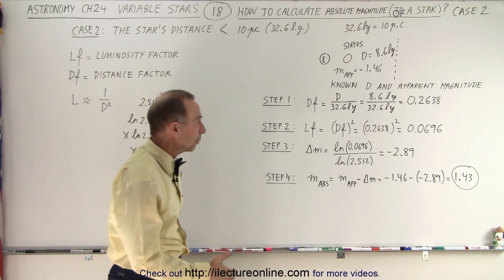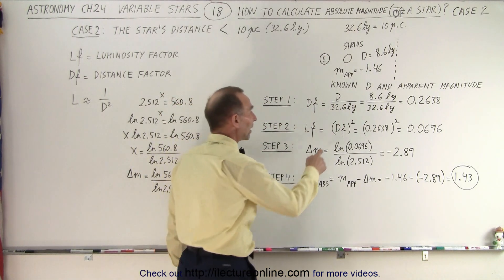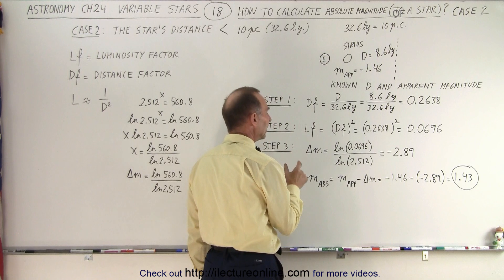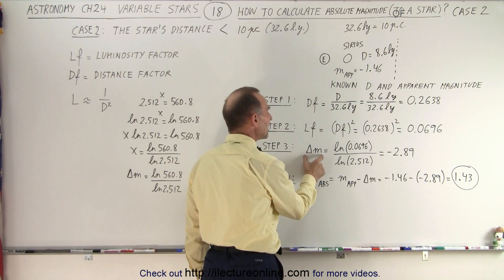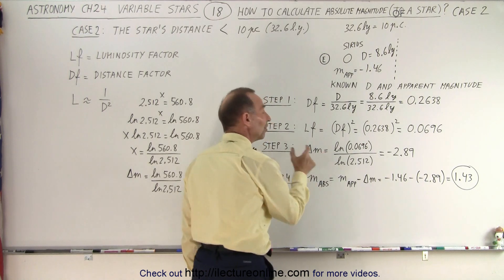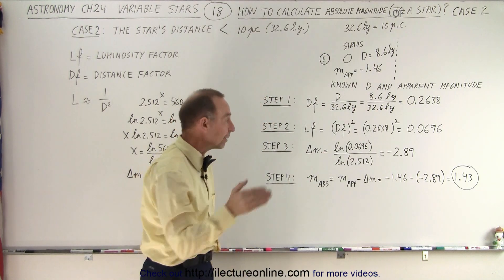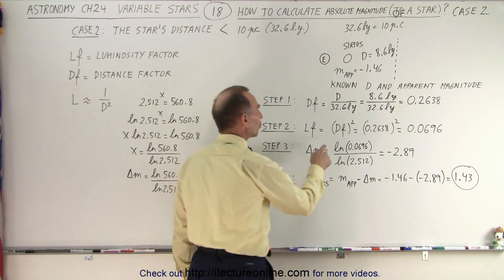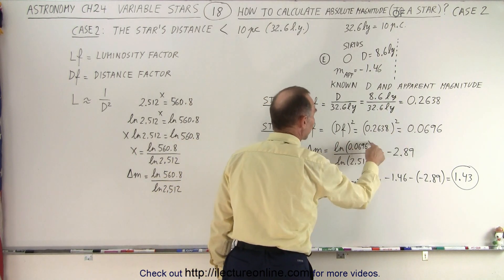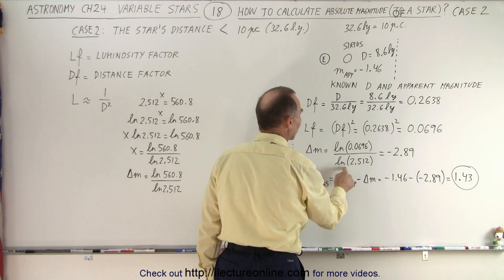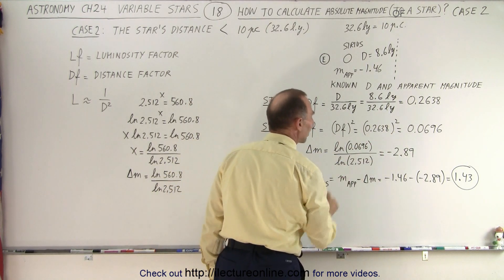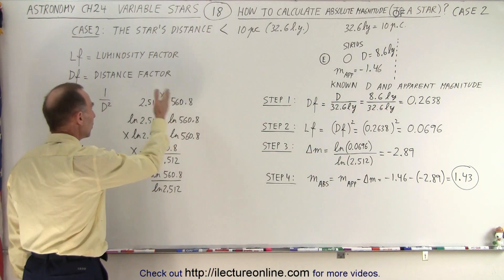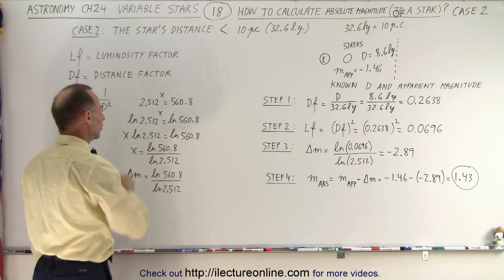Then, as before, we take the distance factor squared to get the luminosity factor. To find the difference in magnitude between the absolute and apparent magnitude, we take the natural log of the luminosity factor divided by the natural log of 2.512.